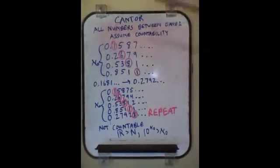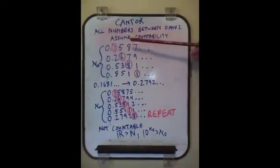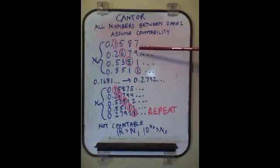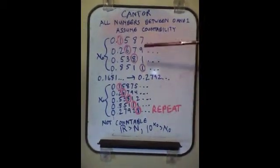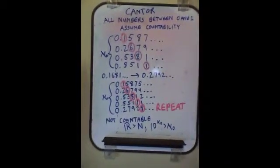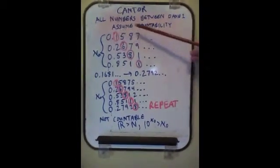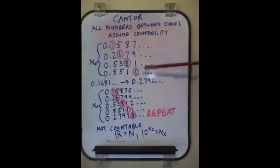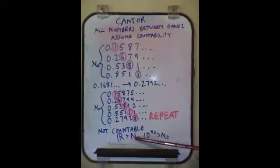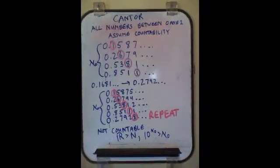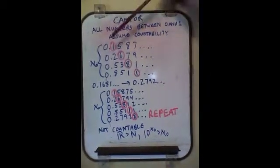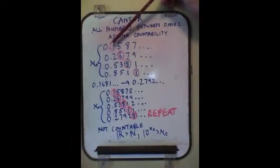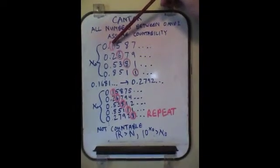Cantor assumed countability of all numbers between 0 and 1. So every single real number between 0 and 1, every single transcendental number, he assumed countability in an argument by contradiction. So he's assuming that R equals N, essentially, that the real numbers and the rational numbers have the same level of countability, just like we've proven that natural numbers and rational numbers have the same level of countability.